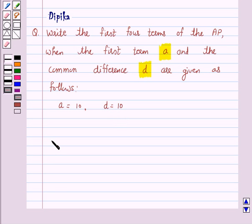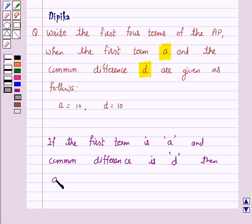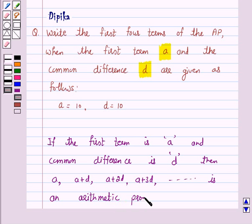So if the first term is a and common difference is d, then a, a plus d, a plus 2d, a plus 3d, and so on is an arithmetic progression. This is the key idea behind our question.